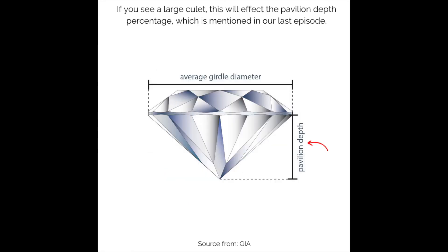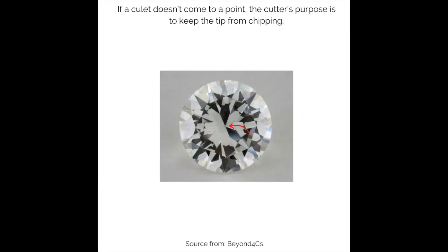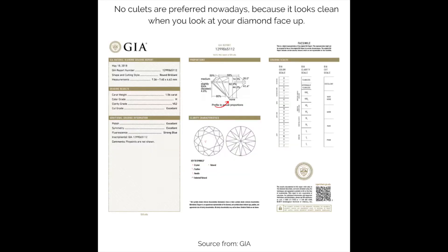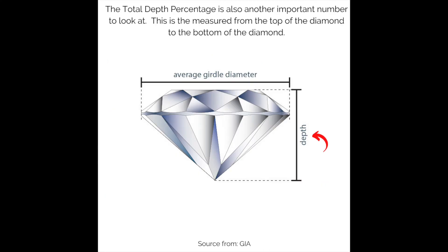If you see a large culet, this will affect the pavilion depth percentage, which was mentioned in our last episode. If a culet doesn't come to a point, the cutter's purpose is to keep the tip from chipping. No culets are preferred nowadays because it looks clean when you look at your diamond face up.